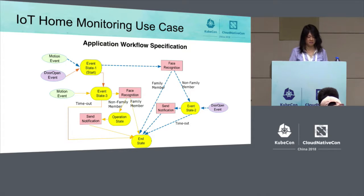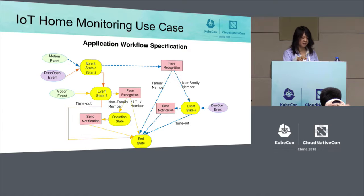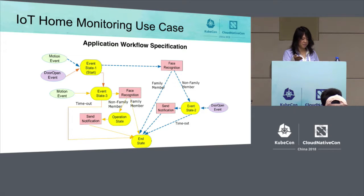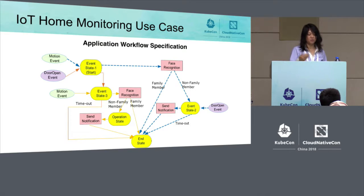If the function result is a non-family member, the workflow will transit to event state two. In this event state, the workflow will wait for the door open event to happen. When the door open event occurs, a function will be triggered to send a notification to the police department and to the homeowner. Then the workflow will transit to the end state.